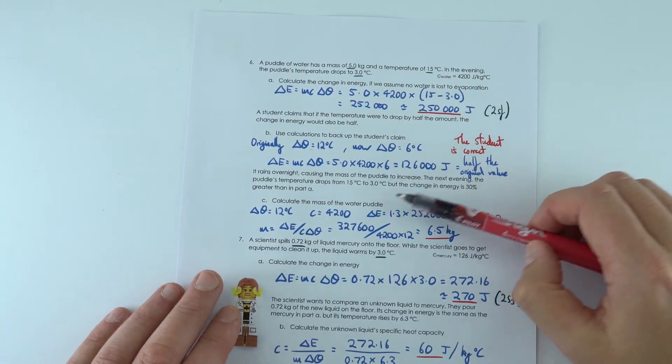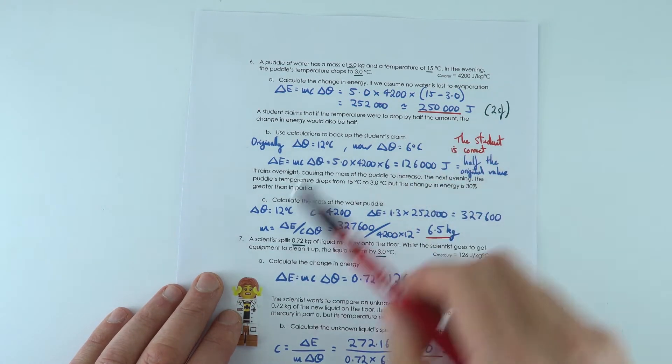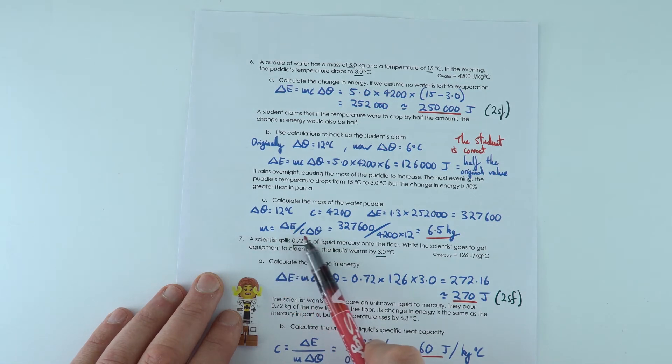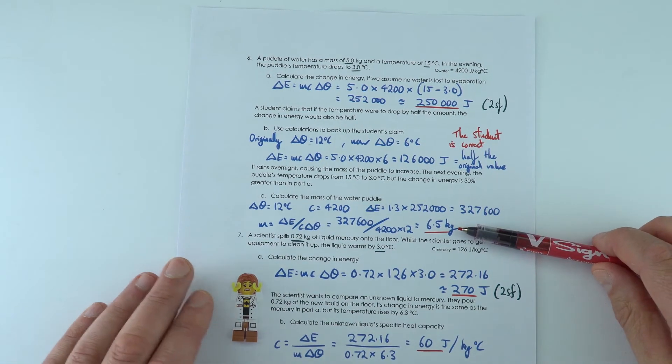For the next one, again, we have to identify the data from the question. We work out we're trying to find out what the mass is. So I've just used that equation rearranged like this to find it's six and a half kilograms.